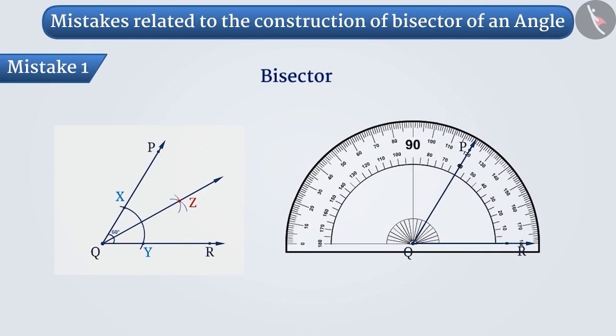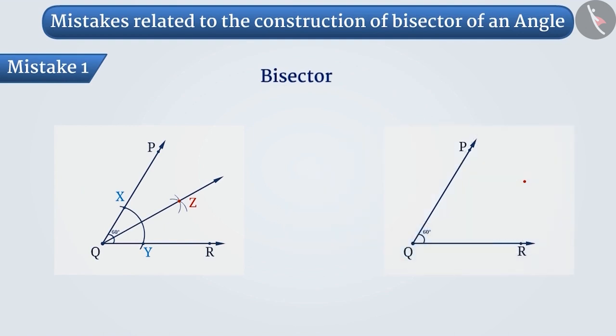Instead, they use a protractor to measure the angle and mark a point at half of this measurement. Then, they draw a ray passing through the vertex at this point.